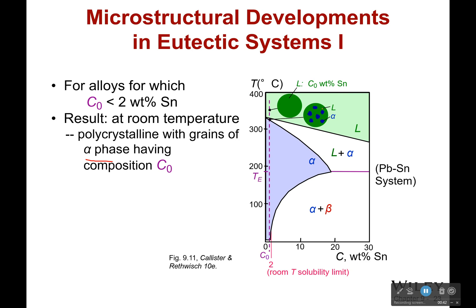As I cool, I'm going to begin to form these alpha grains inside of the liquid matrix. So liquid is holding the alpha grains. As I get to this point, I've now completely solidified and I am mostly lead, but there will be some little dots of tin in here. Very, very few because it's only two weight percent tin.